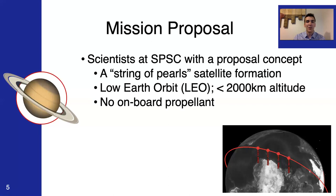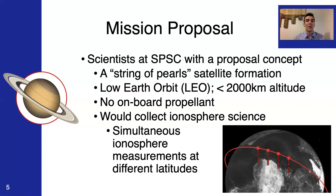This is going to be part of the analysis I'd be working on, is determining that altitude. They said that there would be no onboard propellants, so basically no thrusters. And then they told me that it would be collecting ionosphere science, and with a string of pearls formation, this would allow for simultaneous ionosphere measurements at different latitudes. So, this begs the question, what is the ionosphere and why is this important?